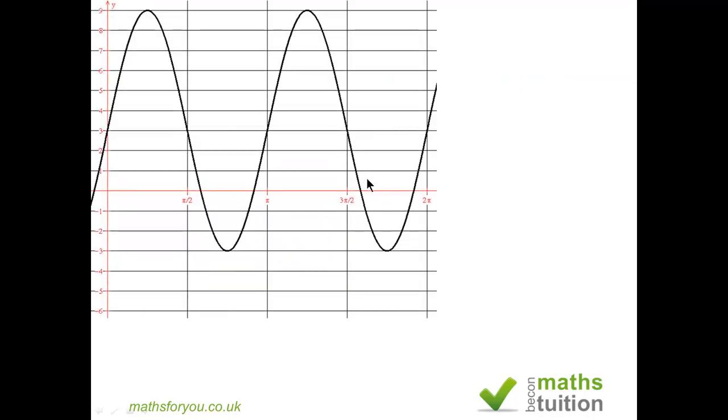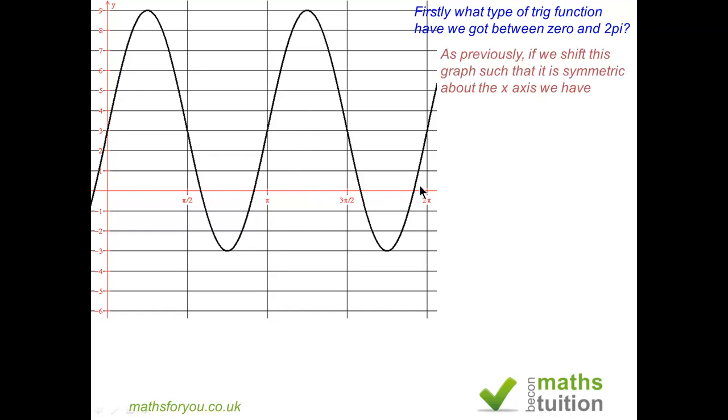Now this is the graph we are considering and we're looking at values between 0 and 2π. What I tend to do is try and shift my graph such that it is symmetrical about the line y equals 0.